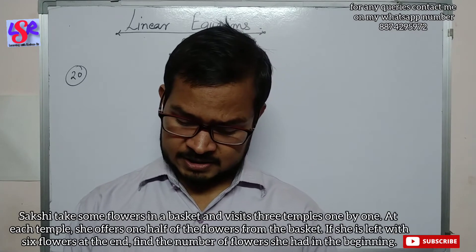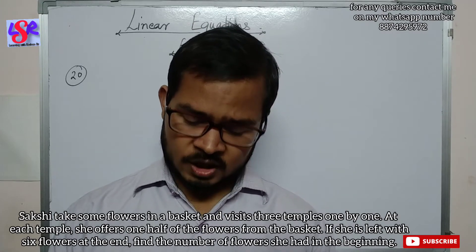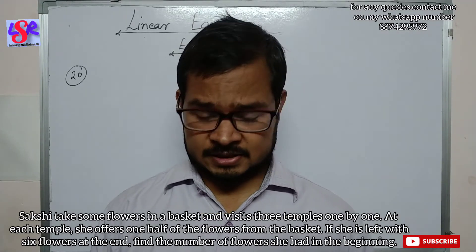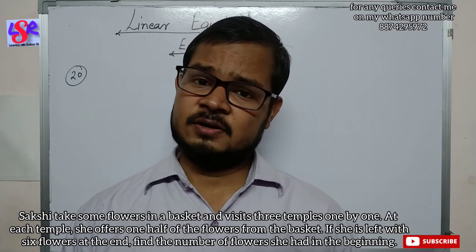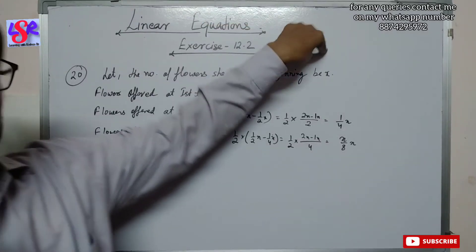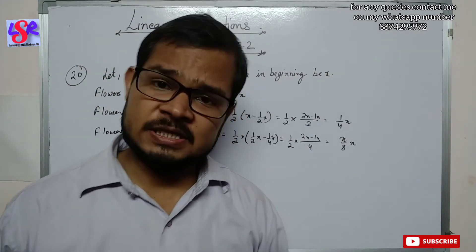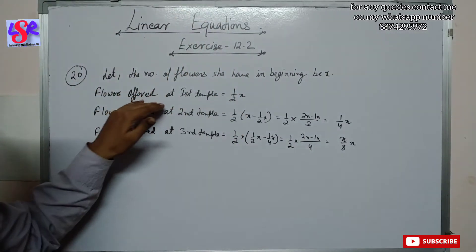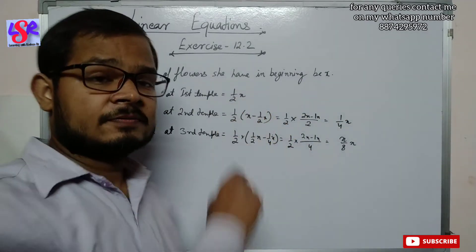Now let's see question number 20. Saab takes some flowers in a basket and visits three temples one by one, offering one half of the flowers at each temple. If she is left with six flowers at the end, how many flowers did she have in the basket initially? Let the number of flowers she had in the beginning be x. In the first temple she offered (1/2)x.